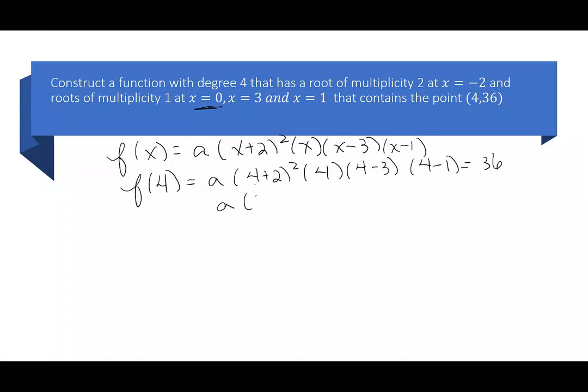4 plus 2 is 6. 6 squared is 36. I just have 4. 4 minus 3 is 1. 4 minus 1 is 3. This is supposed to be 36. This together gives me 432 times a is 36. So a is 36 over 432, which works out really nicely to 1 over 12.